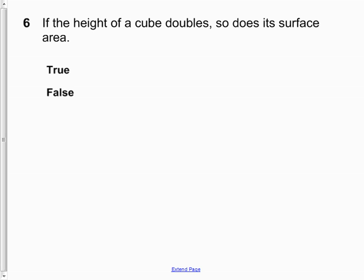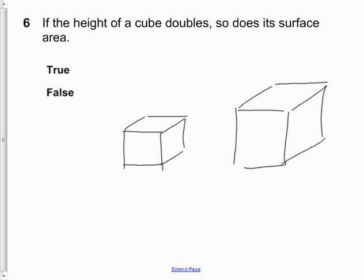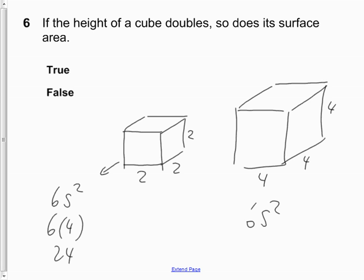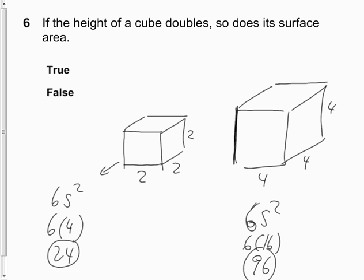Question 6: if the height of a cube doubles, so does the surface area. Choose two cubes — one with side length 2 and one with side length 4. The surface area of the first cube is 6 times 2 squared, or 6 times 4, which is 24 square units. The second cube has 6 times 4 squared, or 6 times 16, which is 96 square units. When I doubled the height, the surface area went from 24 to 96 — it did not double. So the answer is false.